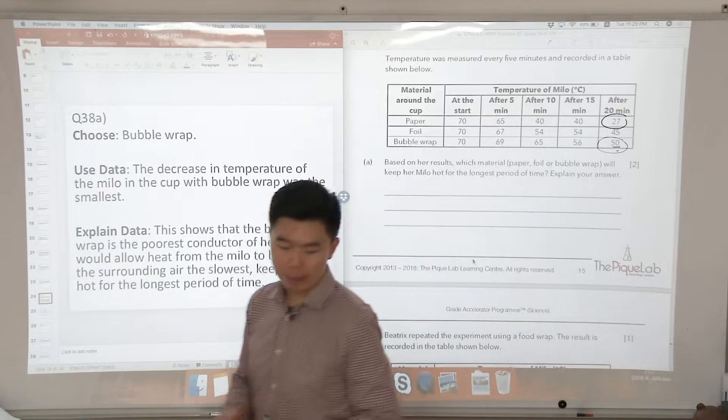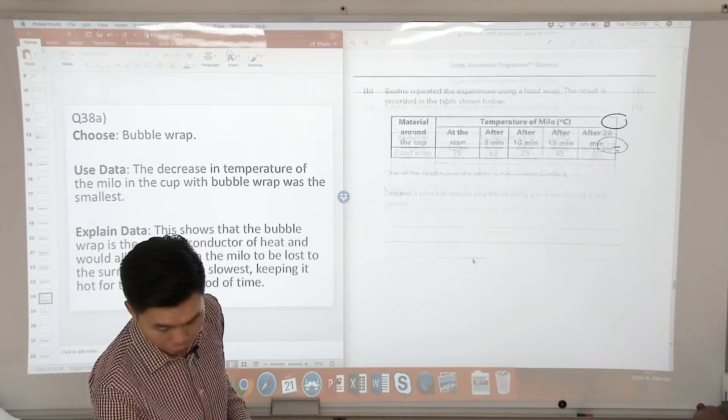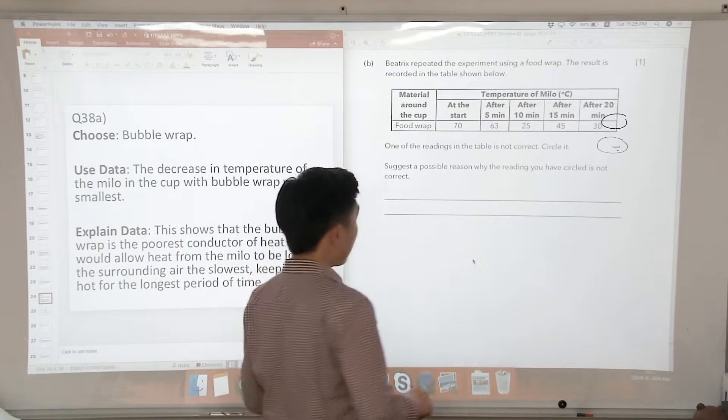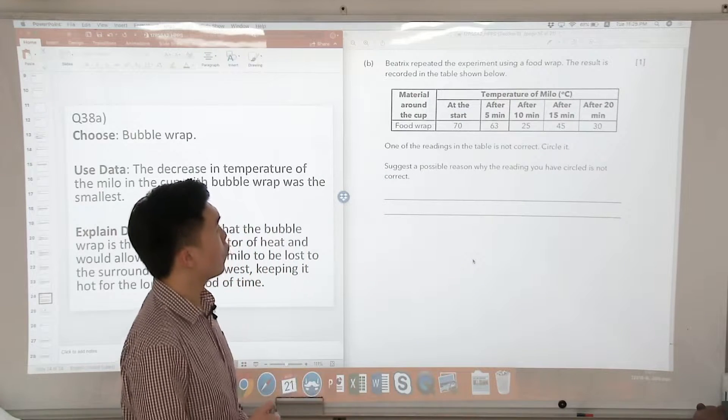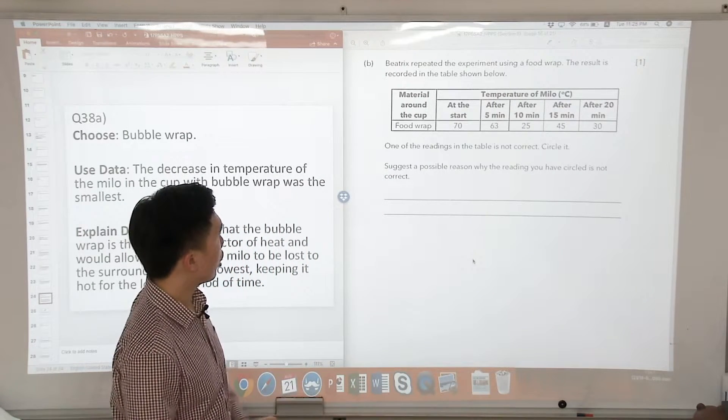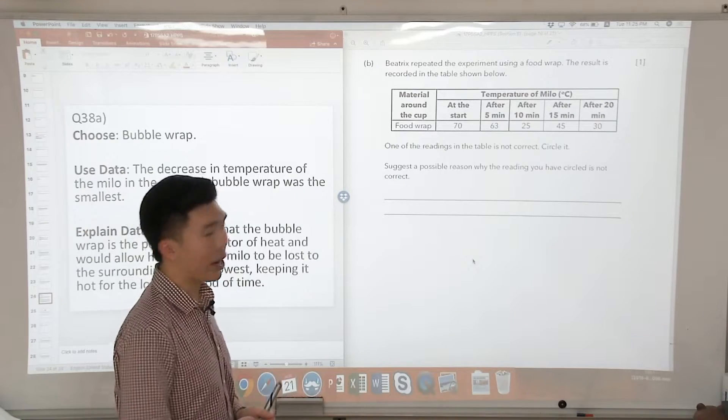Let us go on to part B of the question. For part B of the question, it says here that Beatrice repeated the experiment using a food wrap. The results are recorded. One of the readings is not correct. Circle it.